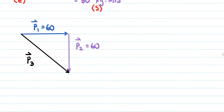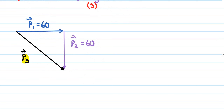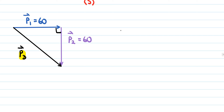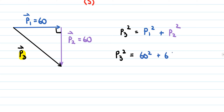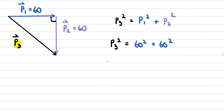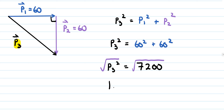We need to find the magnitude of the combined momentum P3. Using the Pythagorean theorem: P3² = P1² + P2², which gives us 60 squared plus 60 squared. Adding those together we get 7200, and taking the square root gives us a combined momentum of 84.853 kilogram·meters per second.